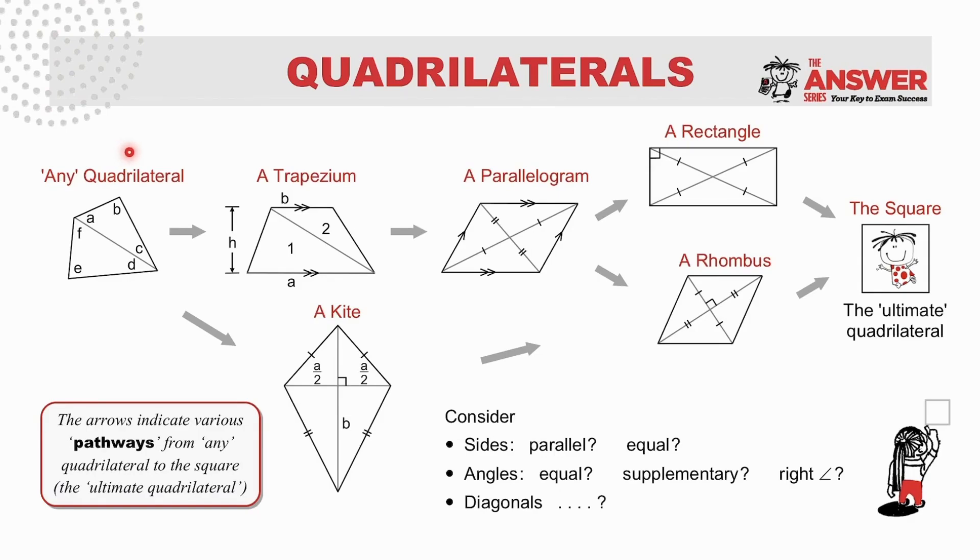Starting with any quadrilateral and then refining all the way to the square, the ultimate quadrilateral. From any quadrilateral to a trapezium, a parallelogram, a rectangle to the square or from the parallelogram to a rhombus to a square. Or a completely different route from any quadrilateral to the kite and then the rhombus and then the square.